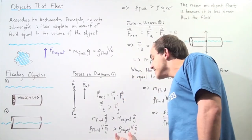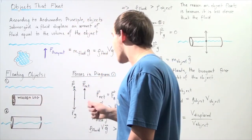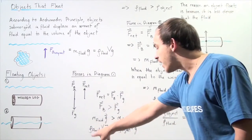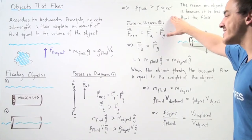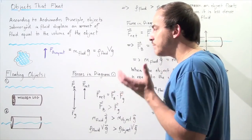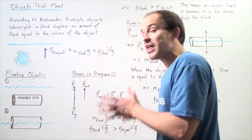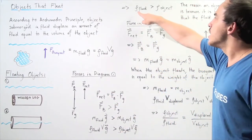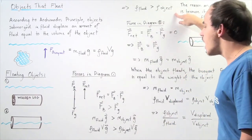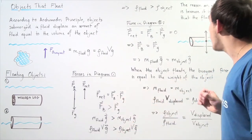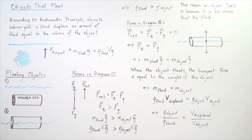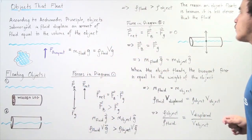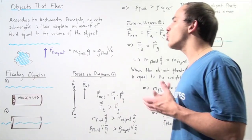The mass of the object is simply the density of the object multiplied by the volume of the wooden log. Notice that g appears on both sides and V appears on both sides, so we can cancel those out — dividing both sides by volume times g. The result is that the density of the fluid is greater than the density of the object. The reason a wooden log placed into water doesn't remain submerged and shoots back up — the reason it floats — is because the density of the fluid is greater than the density of the object. An object floats because it is less dense than the fluid.